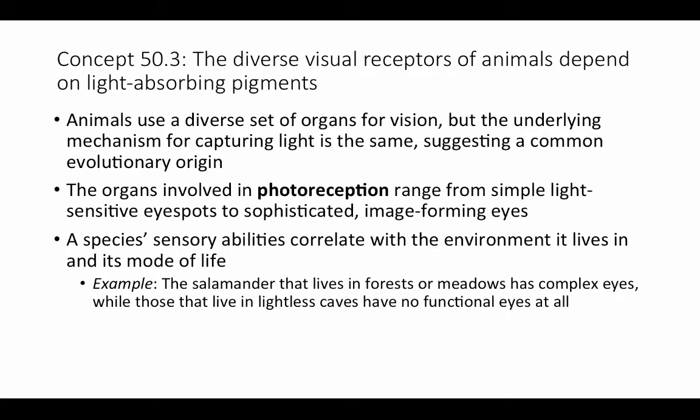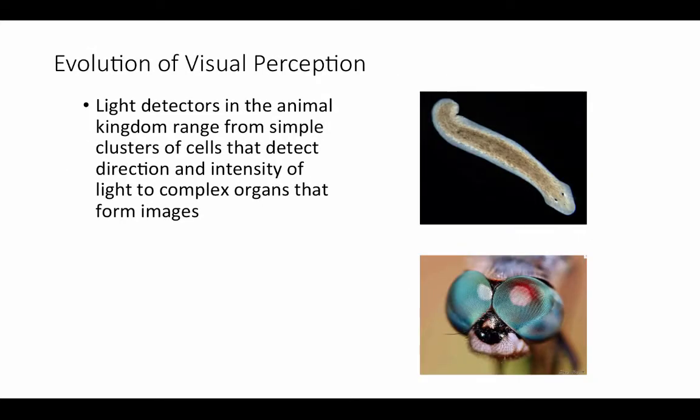In terms of natural selection, we can think of eyeless salamanders living in caves as having evolved from species that did have vision. But when occasional mutations came about that compromised the function of the visual system, they didn't have any negative impact on the organism, so those mutations were able to accumulate, and you end up with degenerate eyes. So let's look at the evolution of visual perception.